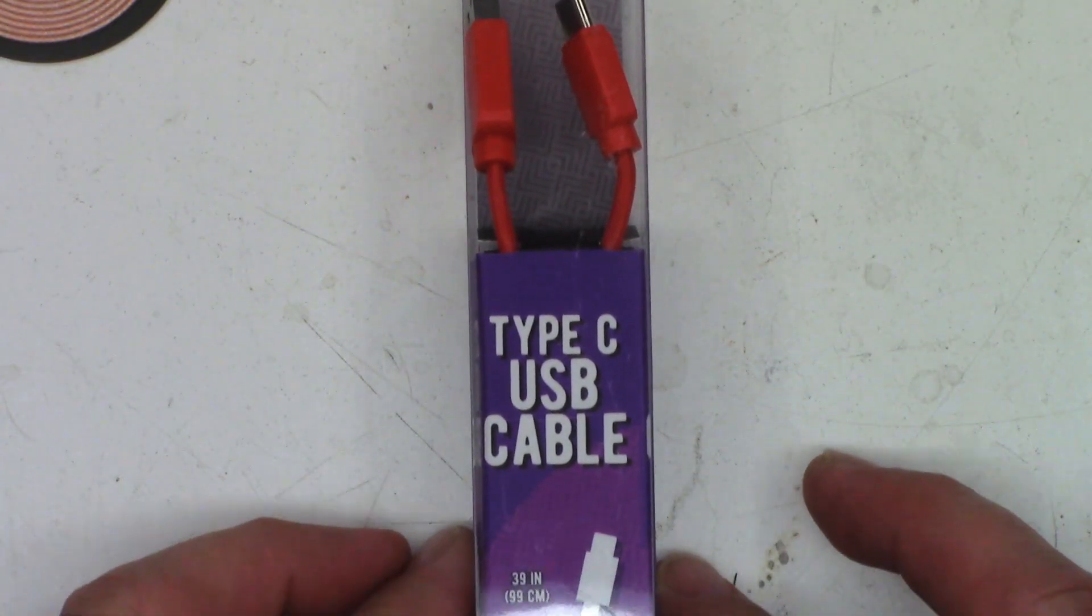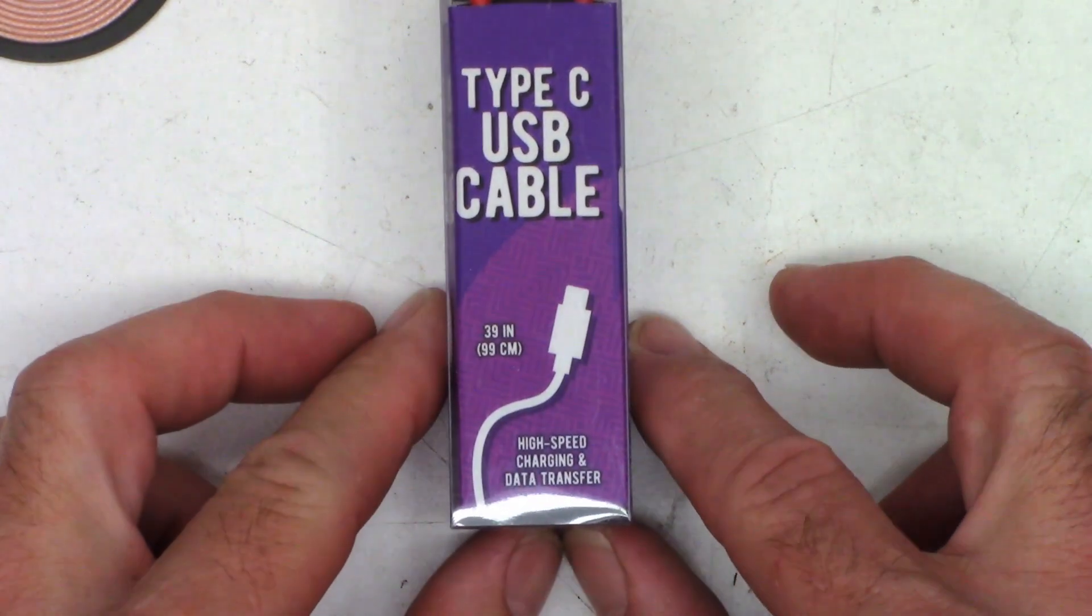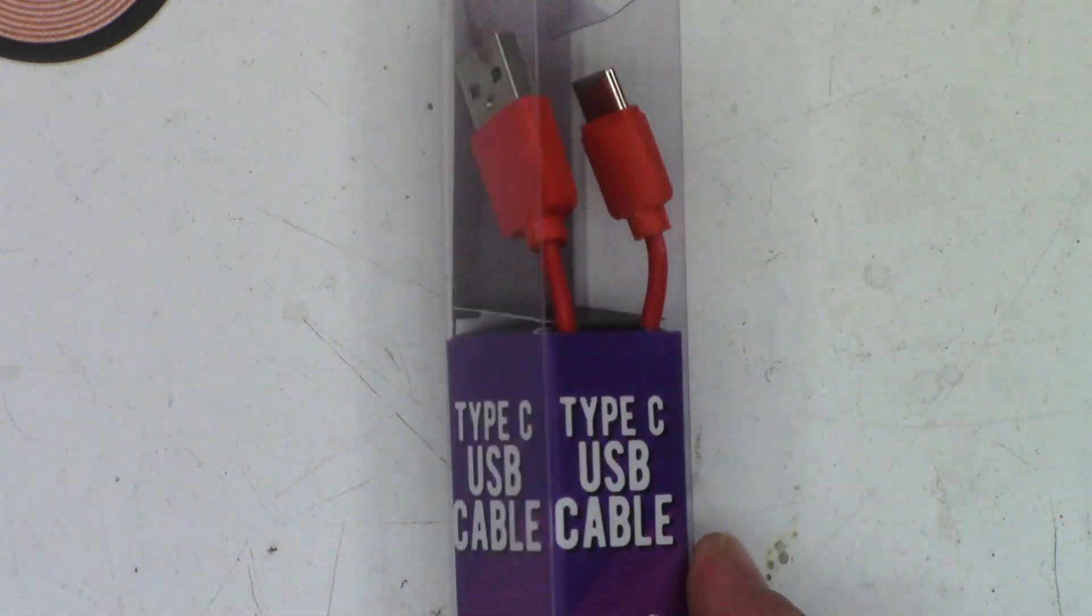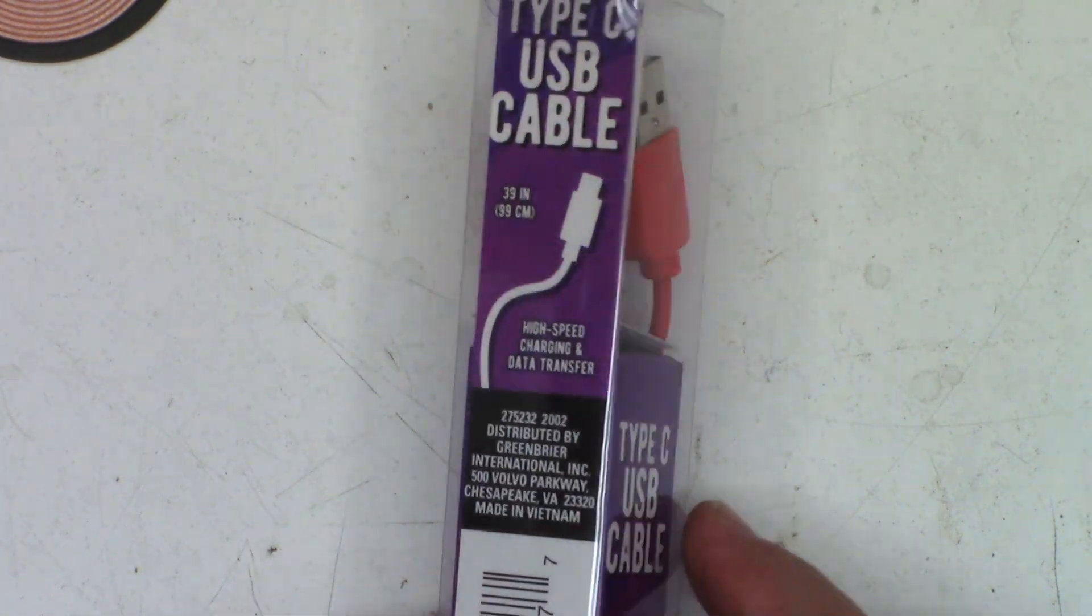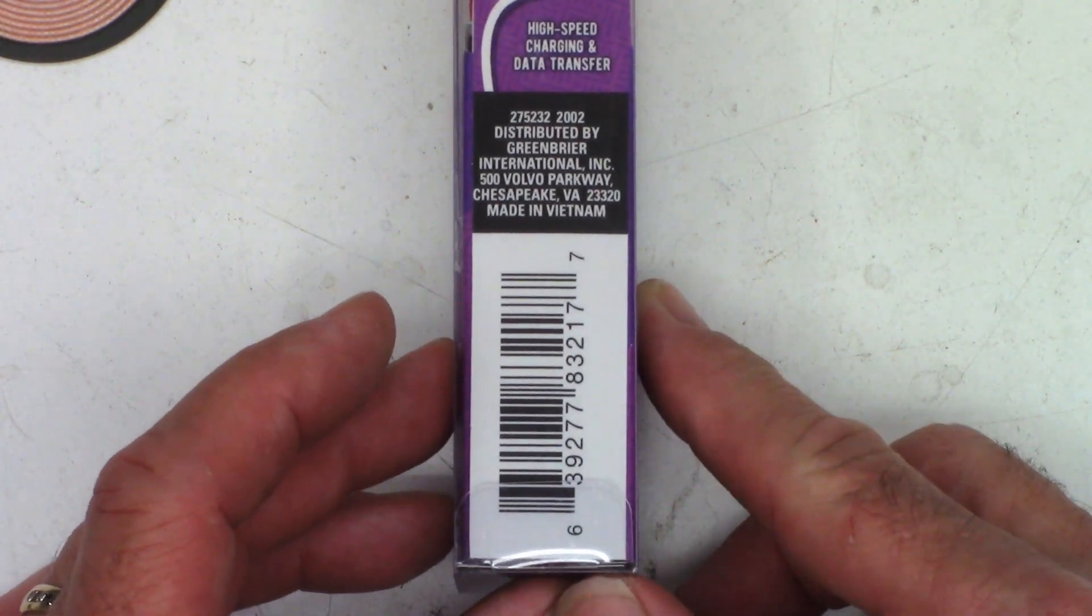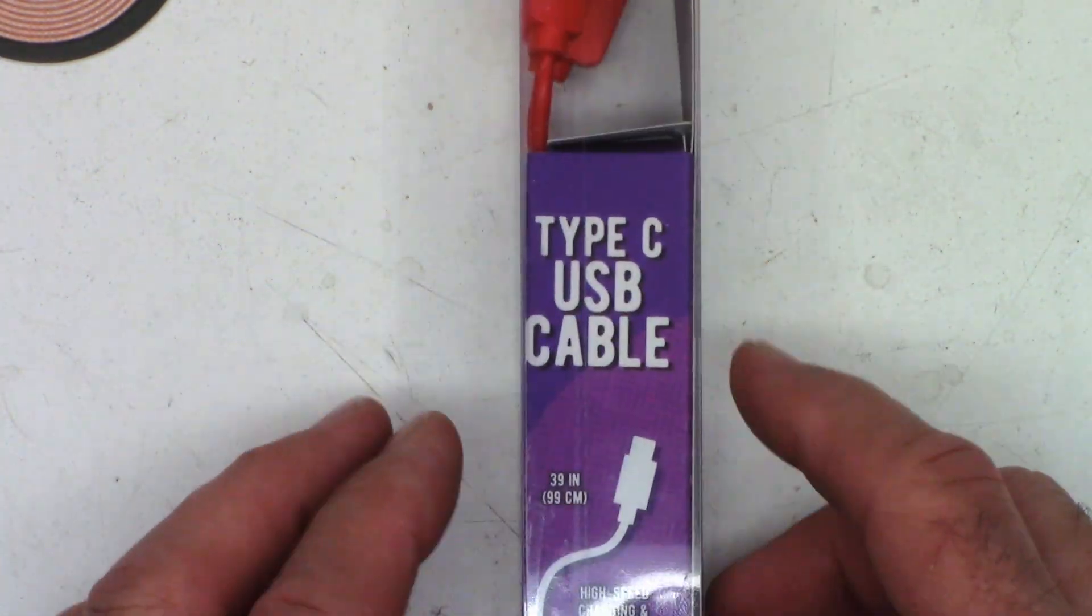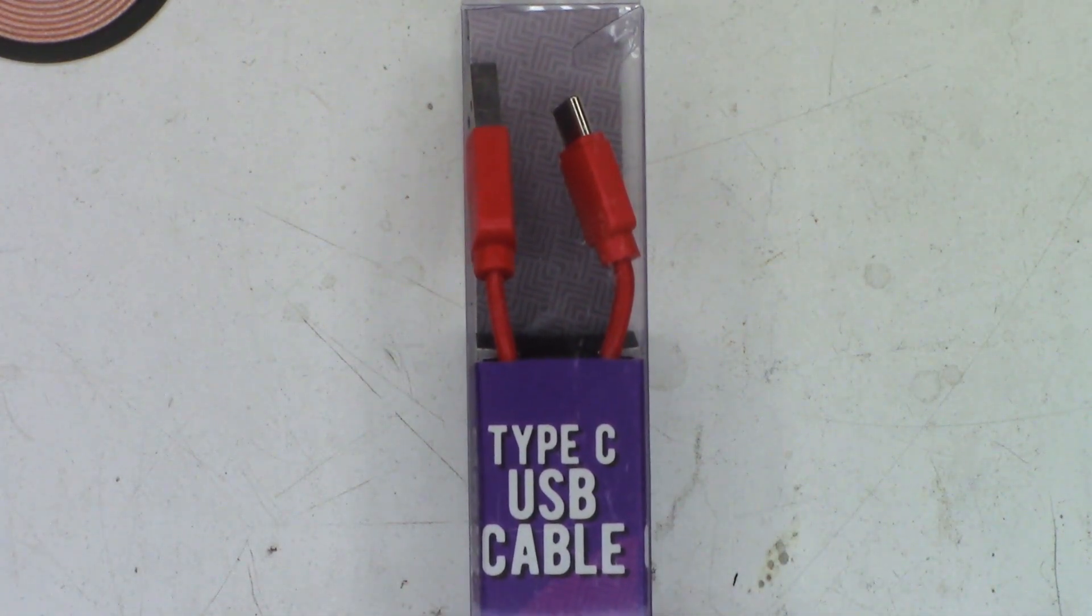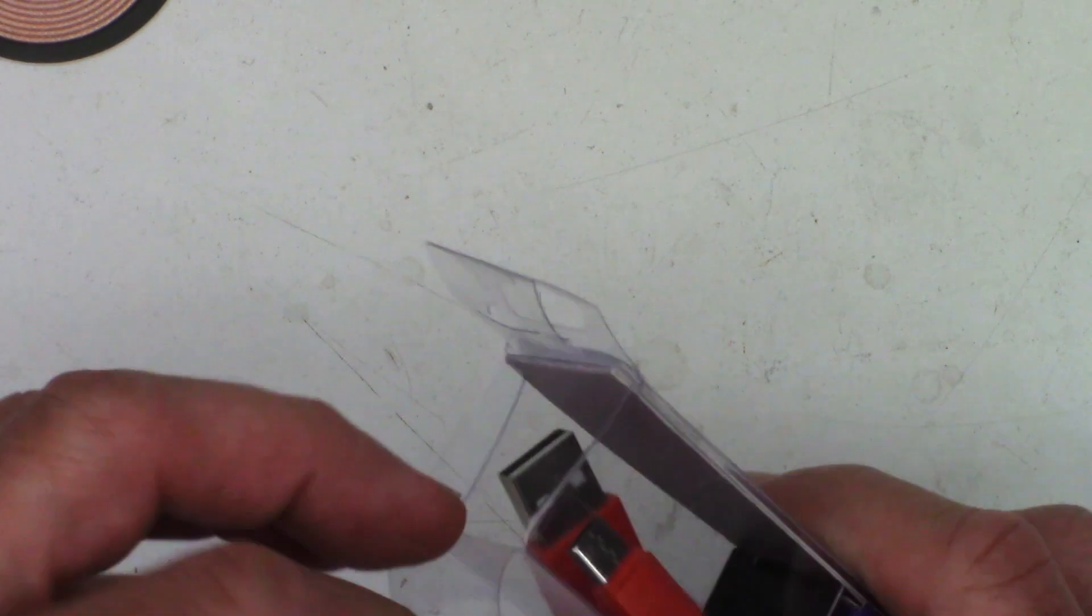Now the cable that I'm going to use, I got from the dollar store. One dollar USB-C cable. I really don't care about the other end. I'm just going to lop it off and we'll solder the leads right onto it. But there it is. There's the barcode, the SKU, if you ever need it. But yeah, I got this from Dollar Tree here in California. So let's go ahead and get it out of the package.